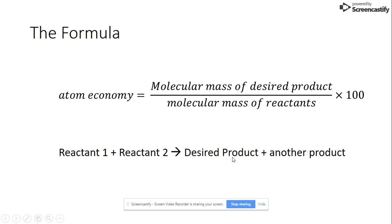So let's see how this matches together. What we would do is we'd find the total molecular mass of both of the reactants that would go on the bottom of our equation and then the desired product's molecular mass would go on the top of that fraction and then we would multiply that by 100 and that would give us the percentage atom economy.